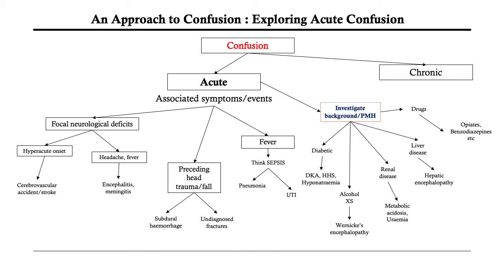You'll need to explore your patient's background and past medical history — this will be very important. In diabetics, consider DKA, hyponatraemia, and HHS. In alcoholics, consider Wernicke's encephalopathy. In patients with renal disease, think about acute and chronic kidney disease, metabolic acidosis, and uraemia. In patients with liver disease, think about decompensation — specifically hepatic encephalopathy. Also assess your patient's medication list, as opioids and benzodiazepines commonly cause drowsiness, delirium, and confusion.